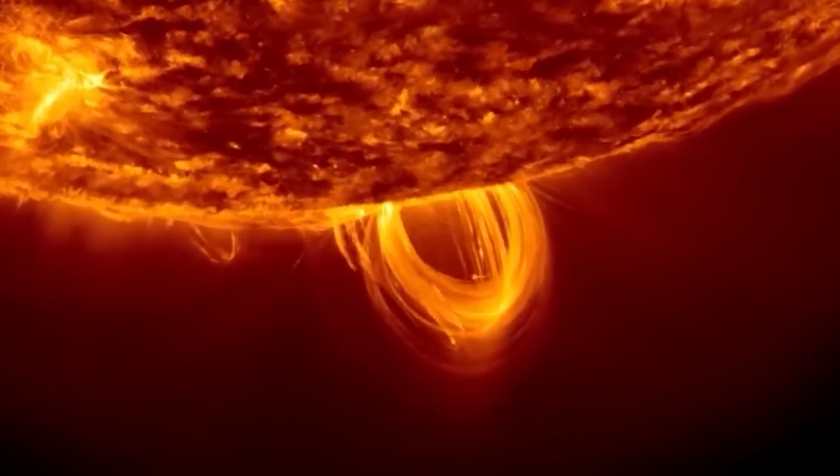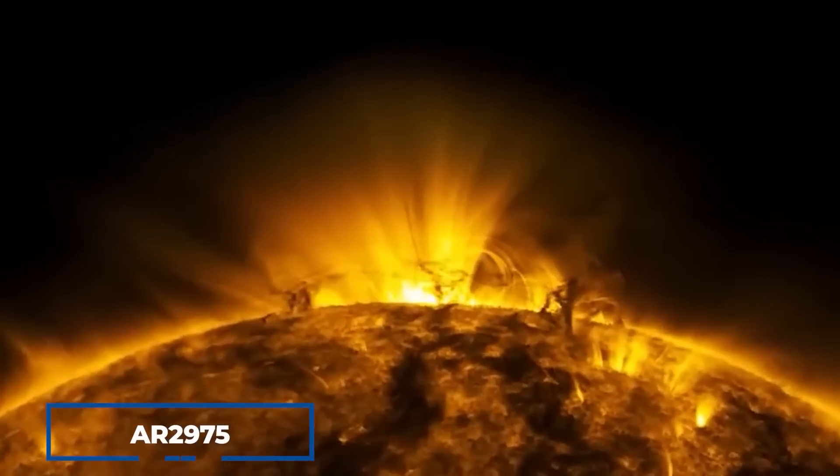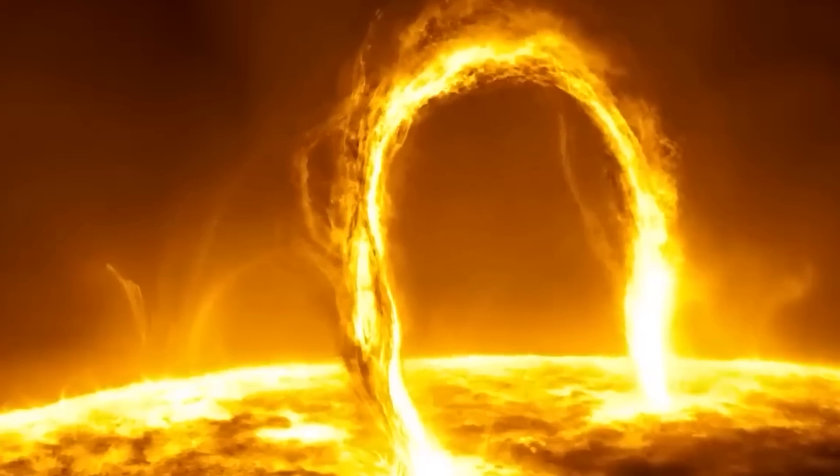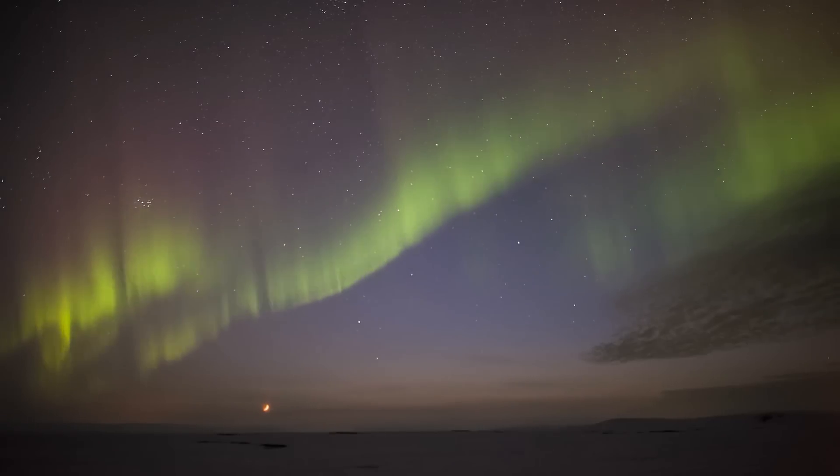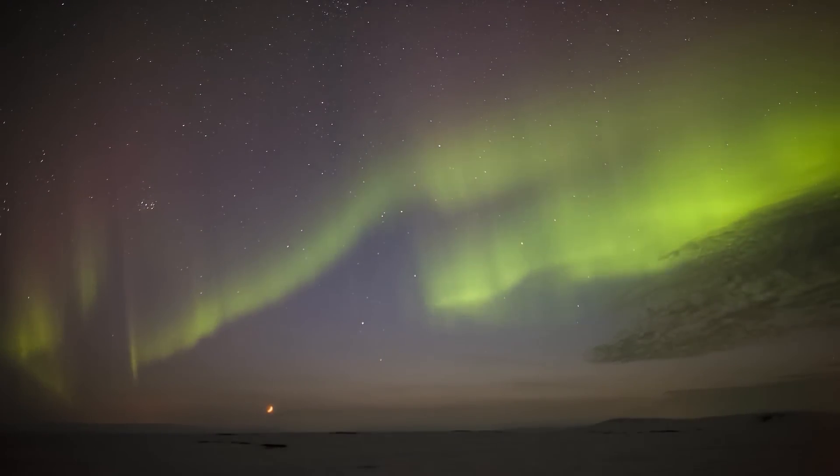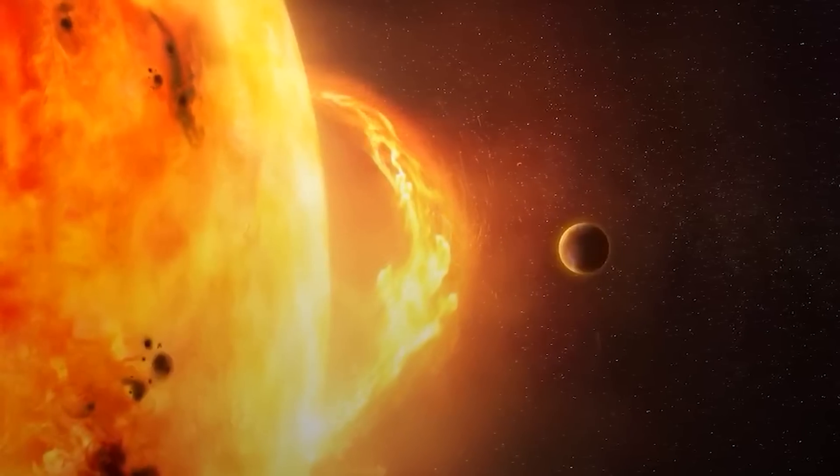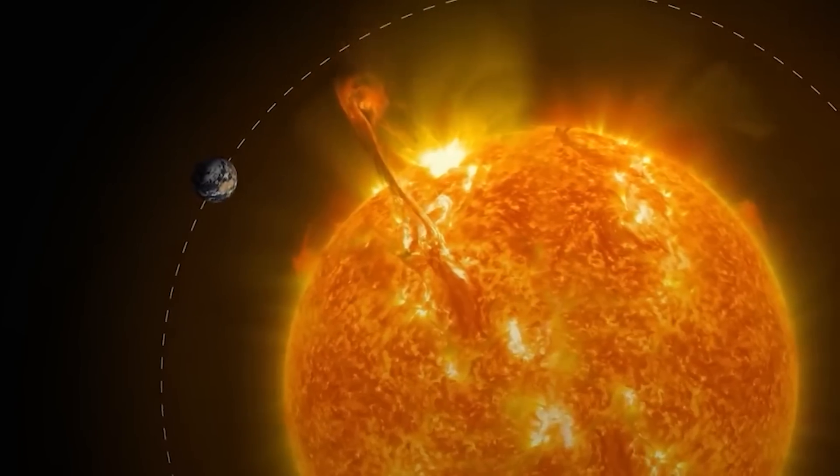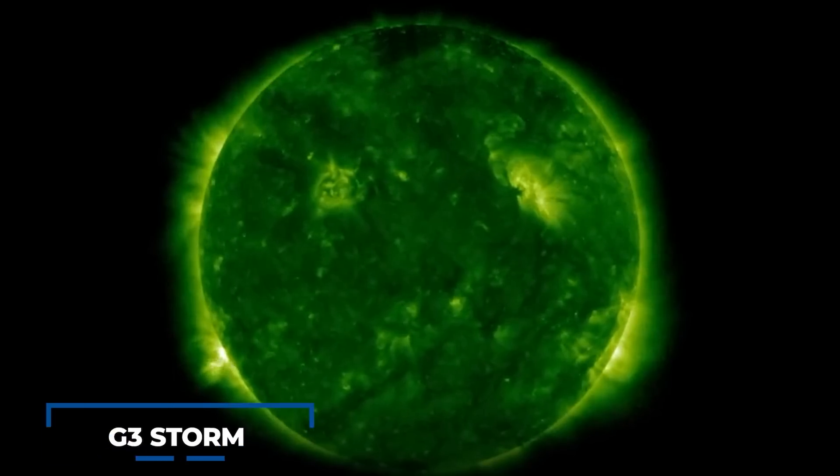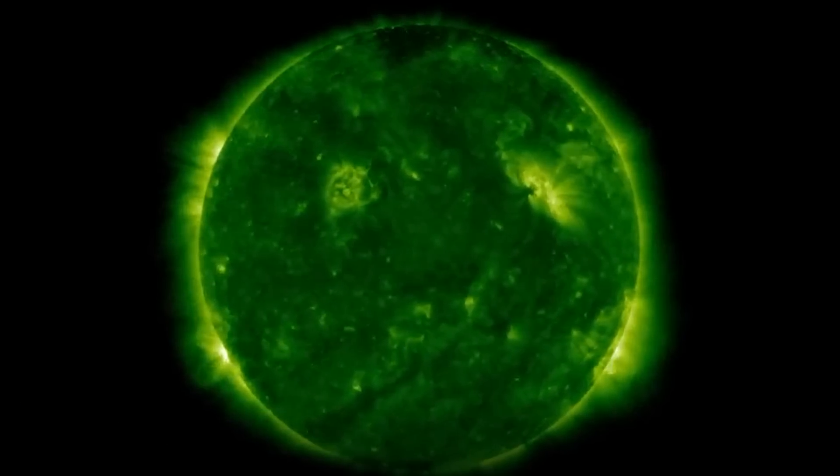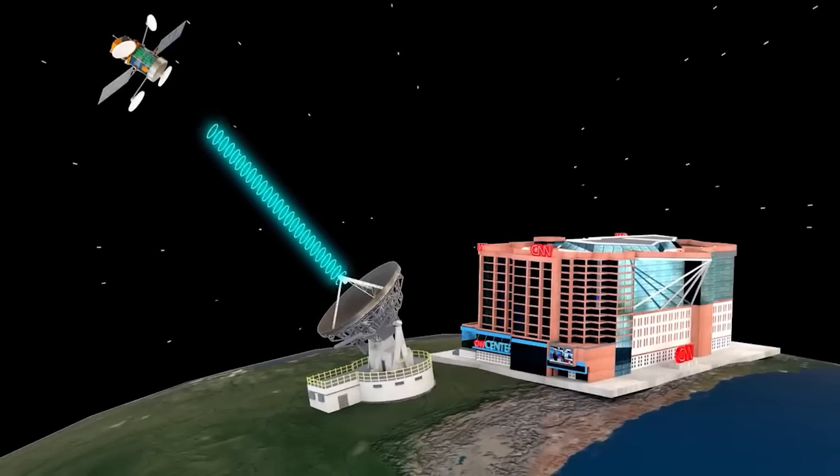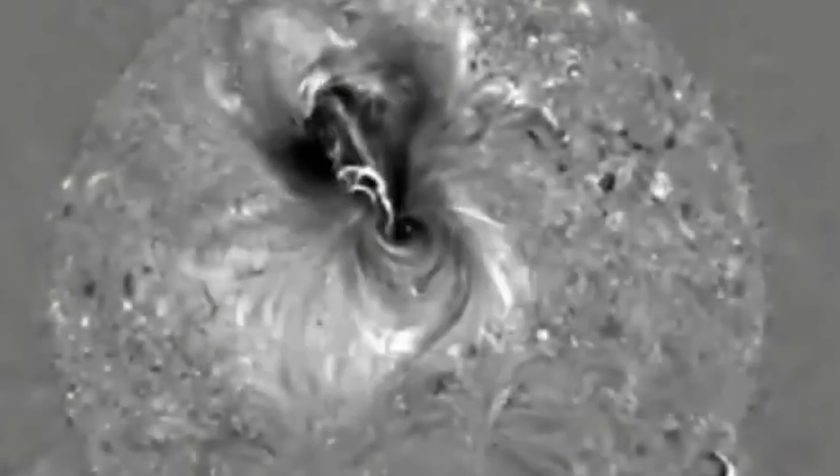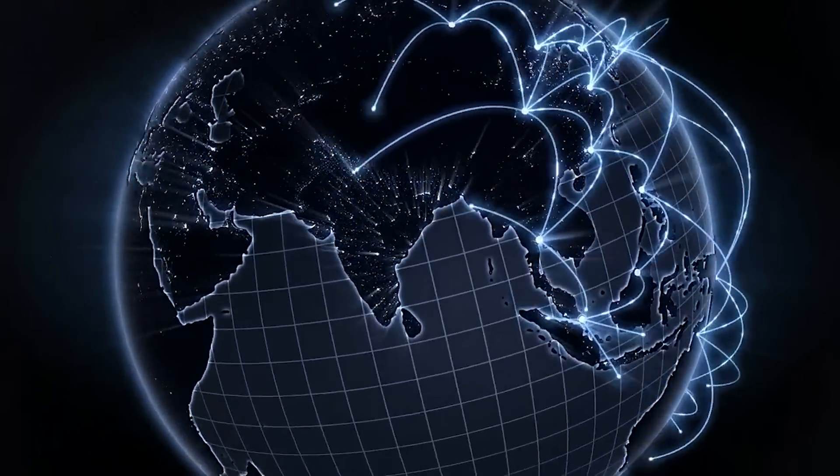Recently, a particularly active sunspot known as AR2975 produced a powerful solar storm that caused a beautiful natural light show called the Northern Lights. However, while these events can be stunning to behold, larger solar storms can be incredibly destructive. G3 storms, for example, can cause problems with radio and satellite navigation, and a massive G3 storm could even knock out the global internet.